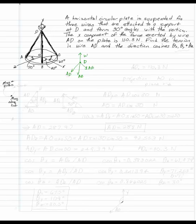We're given that the x-component of the force exerted by the wire AD on the plate is 110.3 Newtons. So the x-component is 110.3 Newtons. What we want to know is just, what is this force AD in Cartesian form?